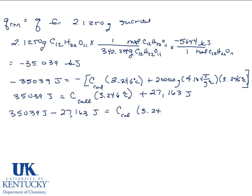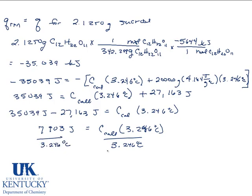That would give me 7,903 joules equals C of the calorimeter times 3.246 degrees Celsius. Divide both sides by 3.246 degrees Celsius. And that will give me the heat capacity of the calorimeter.